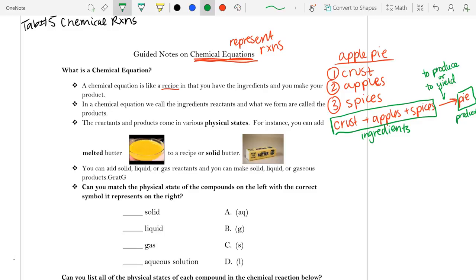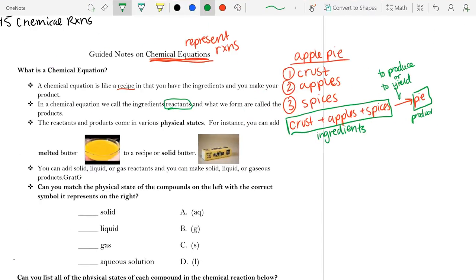So, in a chemical equation, for example, our NaCl, NaCl plus water would produce sodium hydroxide and hydrochloric acid.